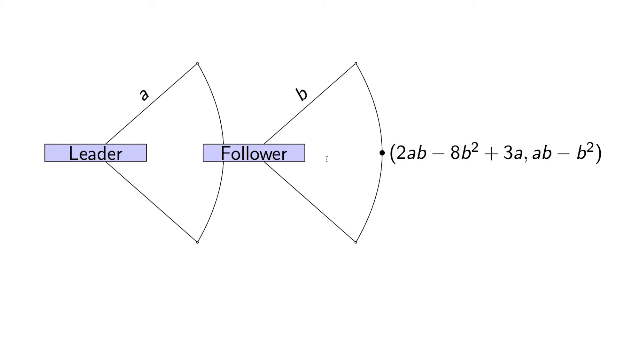And the follower will then choose another real number B. And then the utilities are given here. So the leader will get a utility of 2AB minus 8B squared plus 3A, and the follower AB minus B squared.